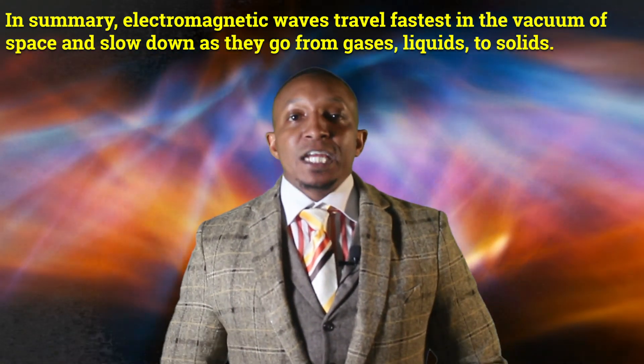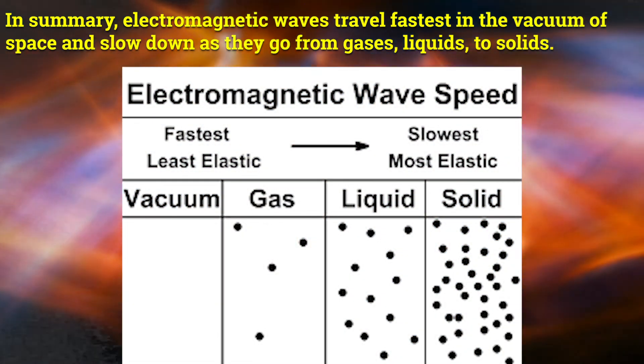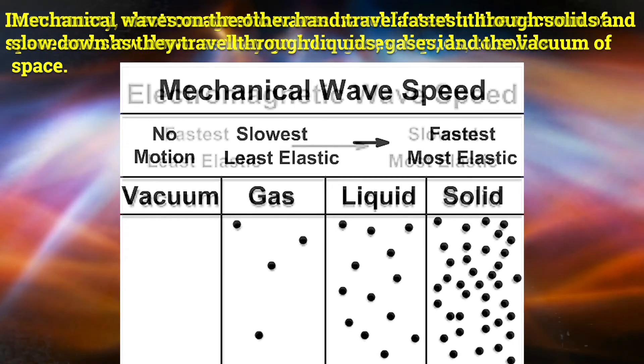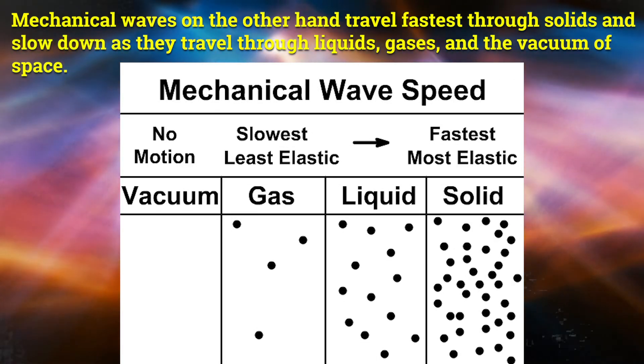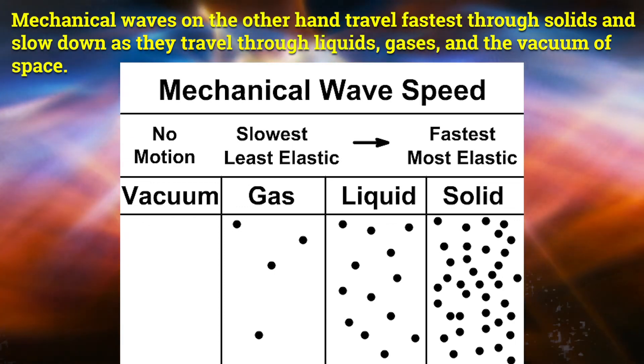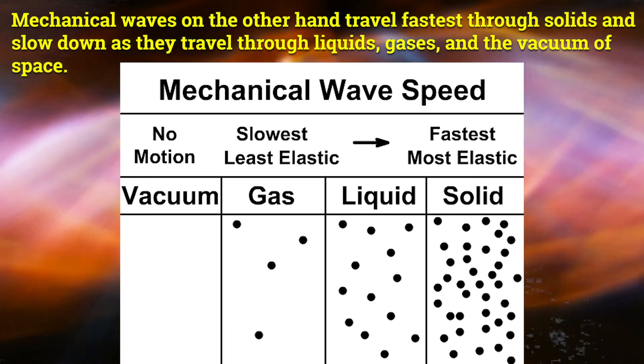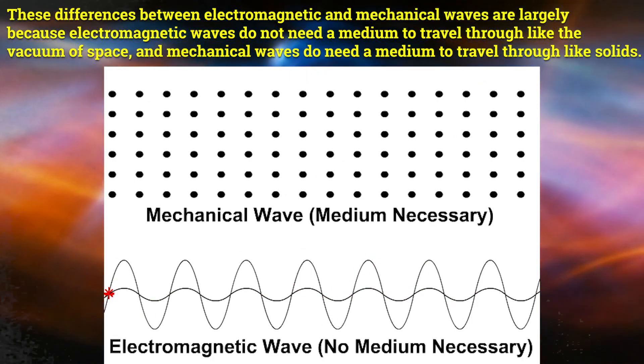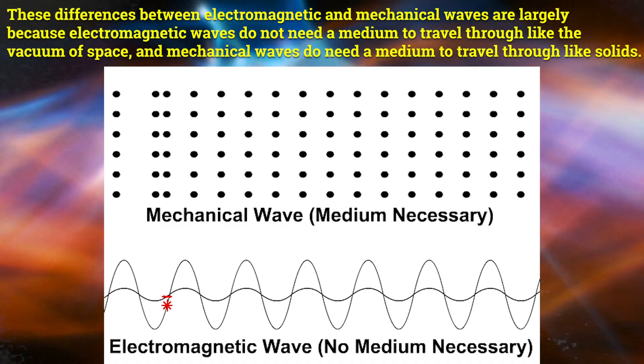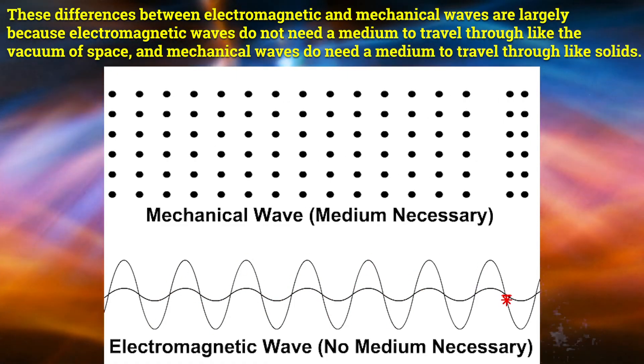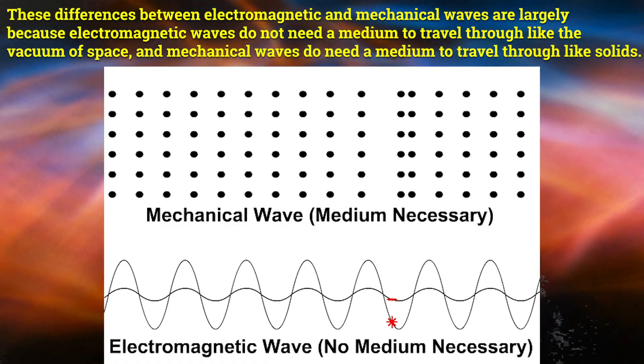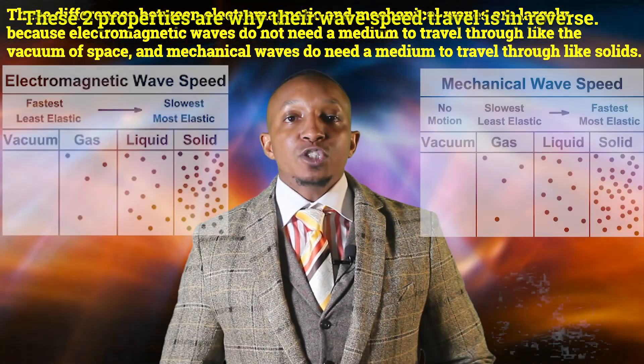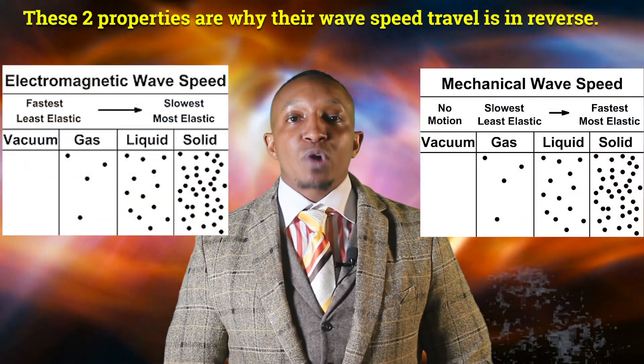In summary, electromagnetic waves travel fastest in the vacuum of space and slow down as they go from gases, liquids, to solids. Mechanical waves, on the other hand, travel fastest through solids and slow down as they travel through liquids, gases, and the vacuum of space. These differences between electromagnetic and mechanical waves are largely because electromagnetic waves do not need a medium to travel through, for example, the vacuum of space. And mechanical waves do need a medium to travel through like solids. These two properties are why their wave speed travel is in reverse.